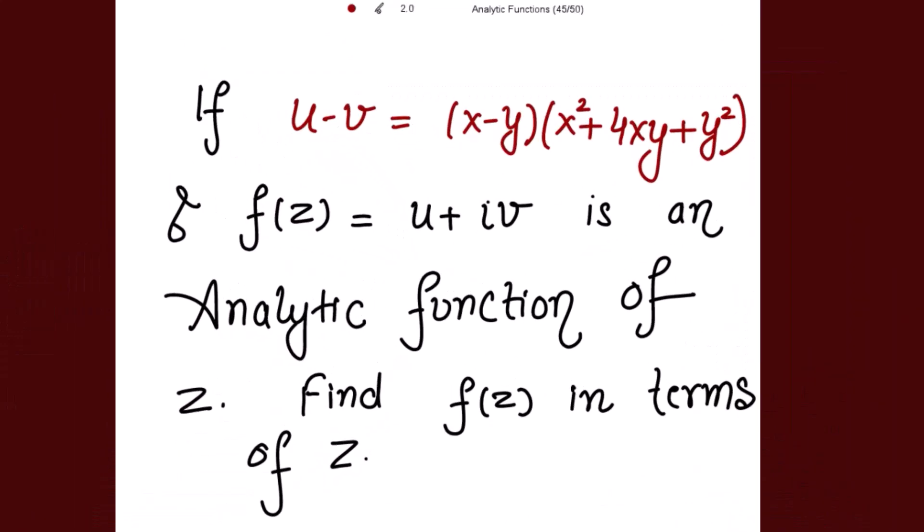Good morning. This is an example from the Millie-Thomson method and it is a very important one. It is given that if u minus v is equal to x minus y into x square plus 4xy plus y square, and f(z) is equal to u plus iota v is an analytic function of z. We have to find f(z) in terms of z.